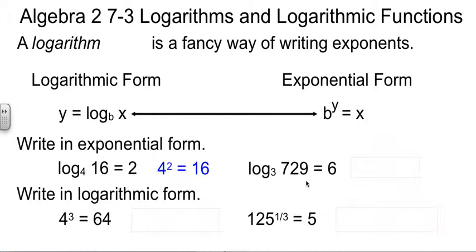Let's try another one. Log base 3 of 729 equals 6. 3 is the base, it will stay the base. The 6 and the 729 trade jobs. So 3 to the 6 equals 729.